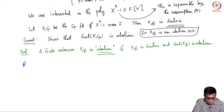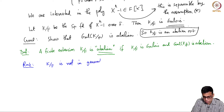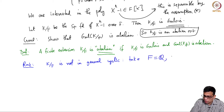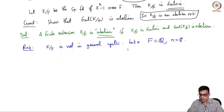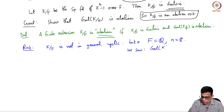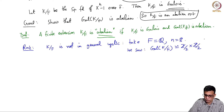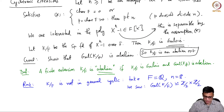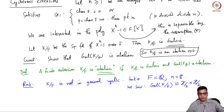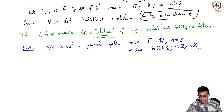We remark that K over F is not in general cyclic. Take K over F to be Q and n to be 8. We saw earlier that the Galois group of K — which is the splitting field of x^8 − 1 — is Z/2Z × Z/2Z. So in general it is not a cyclic extension like a Kummer extension, but nevertheless it is an abelian extension. Remember that K over F is a radical extension because you are attaching an nth root — in this case the nth root of 1.